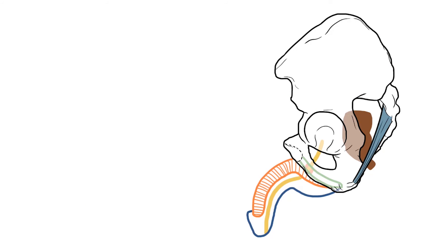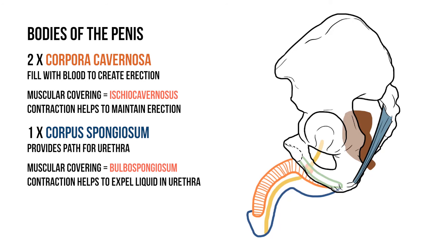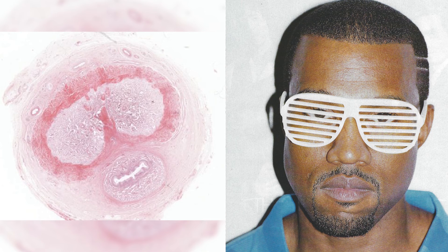So those are the major features of the male external genitalia. The main points I'd take from this are the names and functions of those erectile tissues as well as the muscles that cover them. I'd also note that the cross section of the penis looks surprisingly like Kanye West circa 2008.